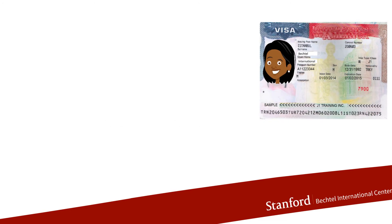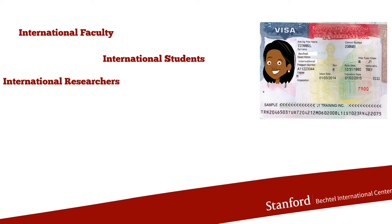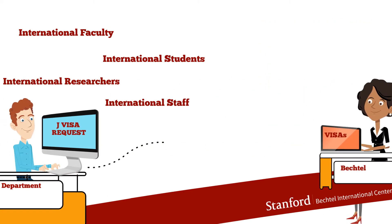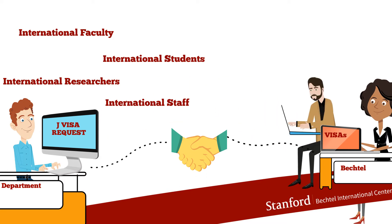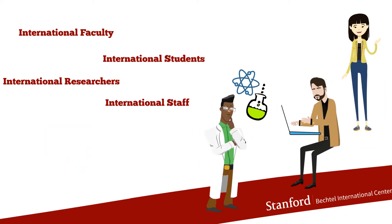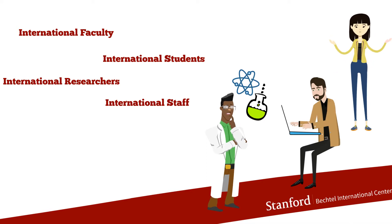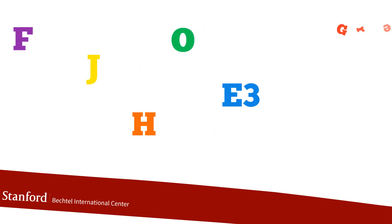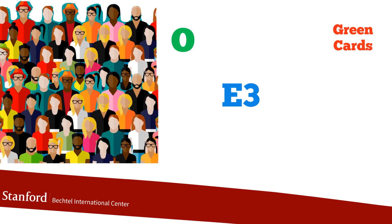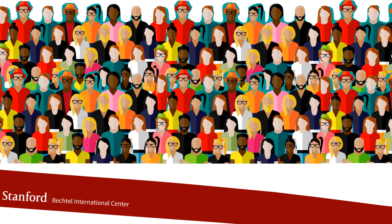Bechtel handles the visas for international students, faculty, researchers and staff. With your help, we do the visa work so that international students, faculty, researchers and staff can legally study, teach and engage in research and collaboration in the U.S. We manage F, J, H, O and E3 visas as well as green cards for those who are affiliated with Stanford and need visa sponsorship.